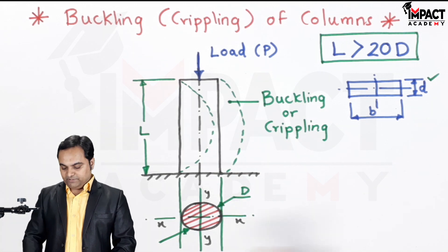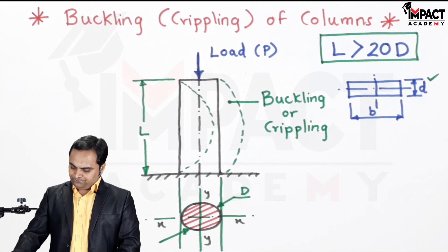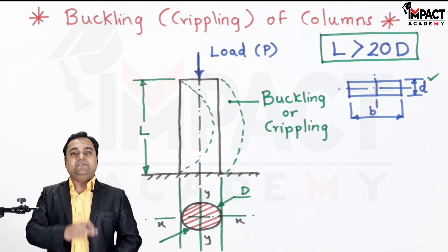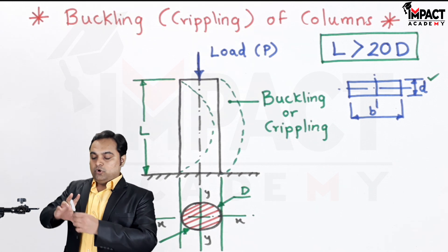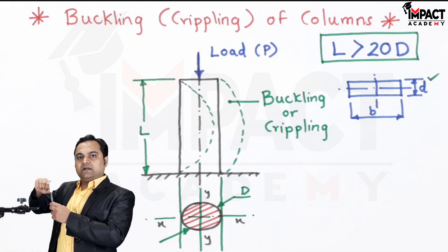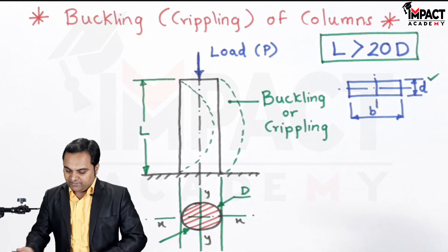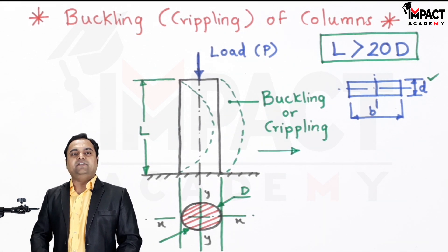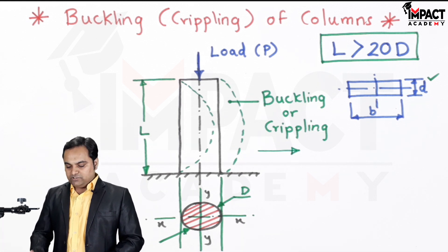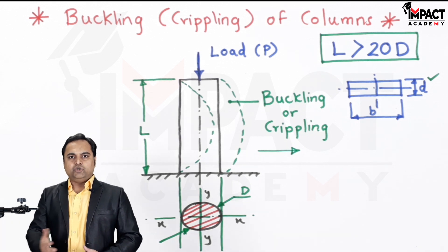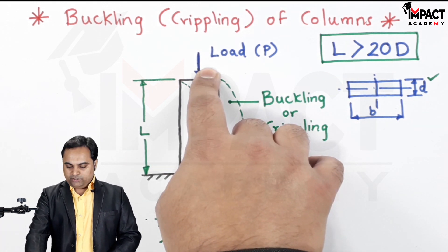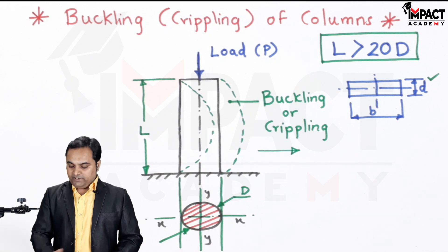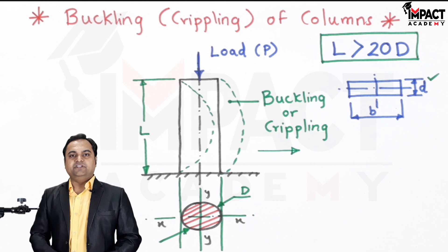This is called the buckling or crippling of a column. It may occur from any given side, either towards the right or towards the left. Buckling or crippling occurs when the axial load is applied on a long column and it moves into the lateral direction. Such a condition is never desired because whenever a column buckles or cripples it means it has failed, and we need to avoid this condition.